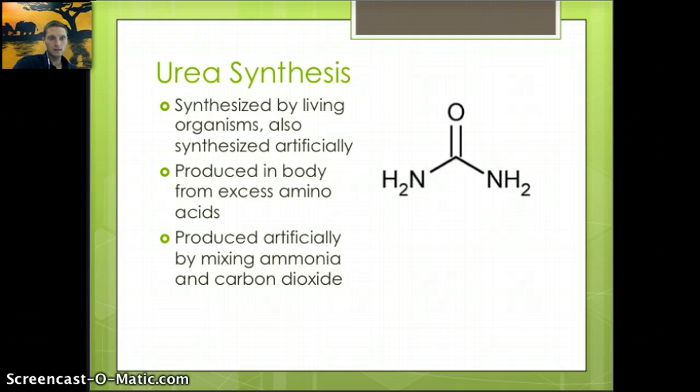In the 1820s, urea was synthesized by a scientist using silver isocyanate and ammonium chloride with no plants or animals. This disproved the fact that molecular compounds could only be produced by living organisms. Now it's produced artificially by mixing ammonium and carbon dioxide, and this urea is often used in nitrogen fertilizer for crops.